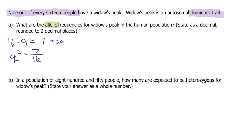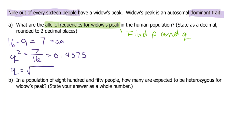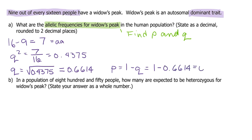What are the allelic frequencies for widow's peak? We're talking about the alleles — find p and q. 7 out of 16 is 0.4375. Then we find q, which is the square root of q squared, so the square root of 0.4375 is 0.6614. And then p is 1 minus q, which is 1 minus 0.6614, which is 0.3386. So p is 0.34 rounded, and q is 0.66.